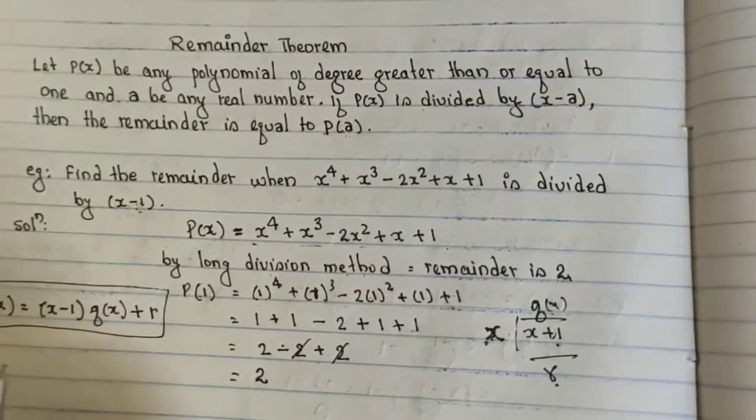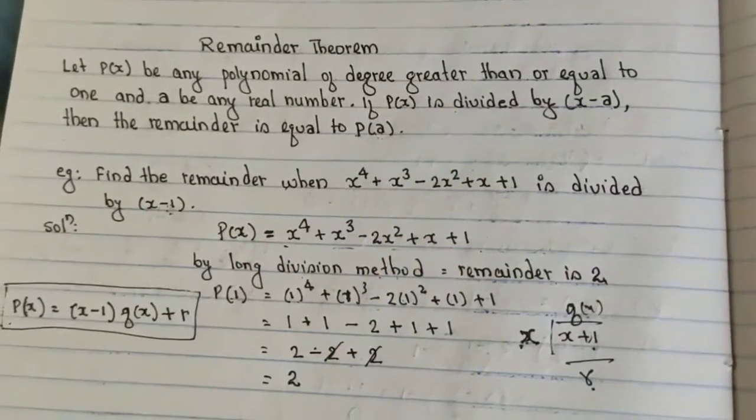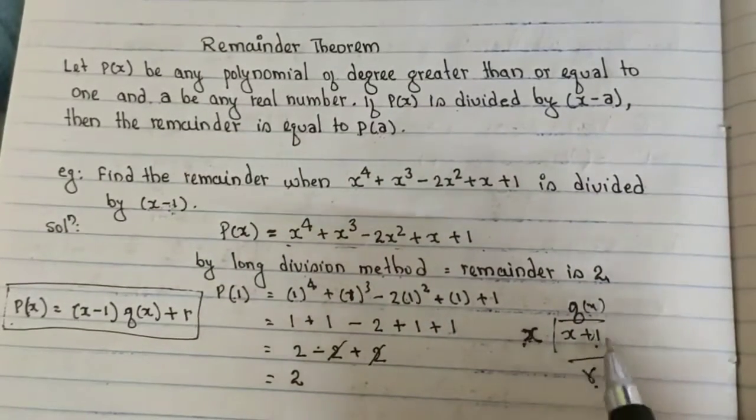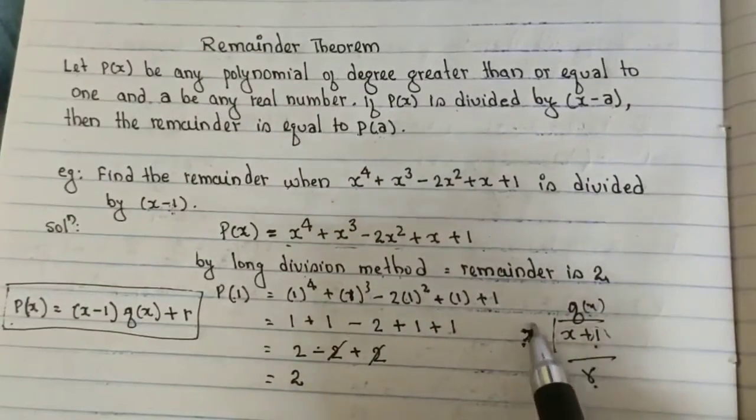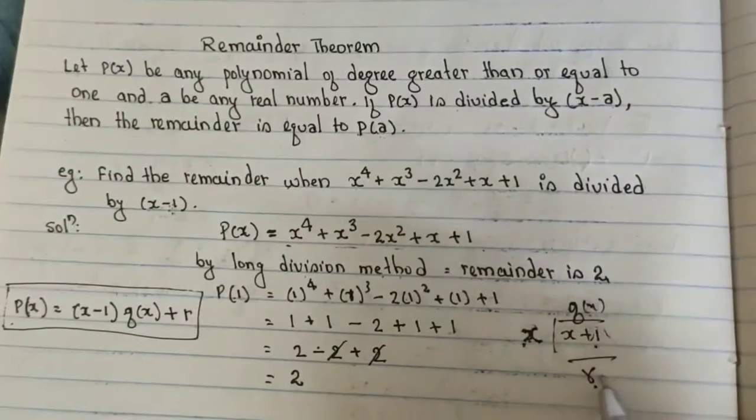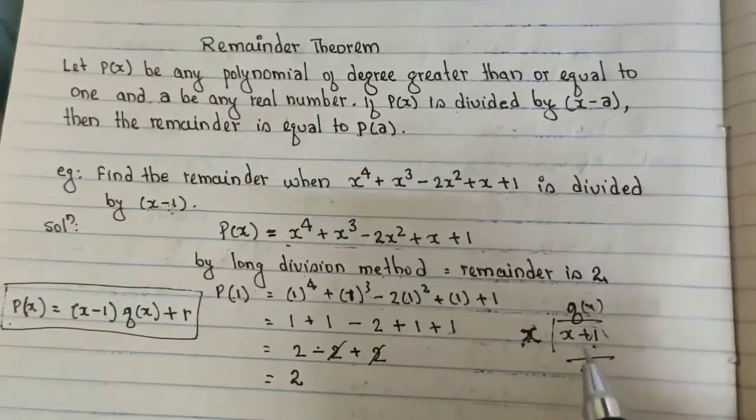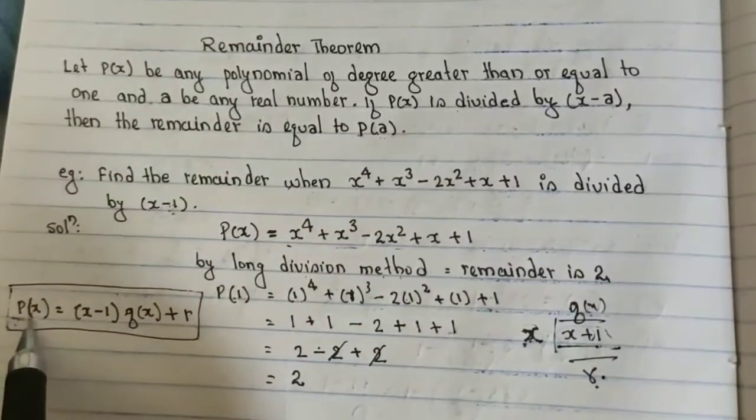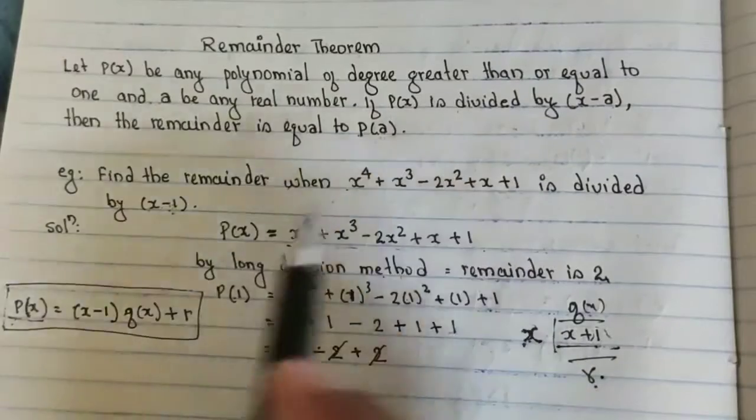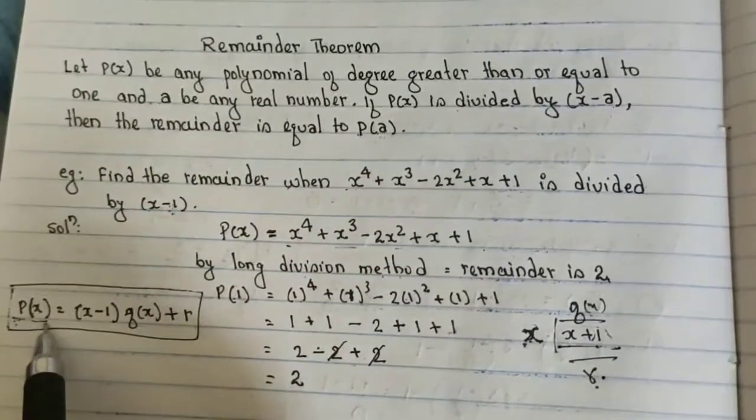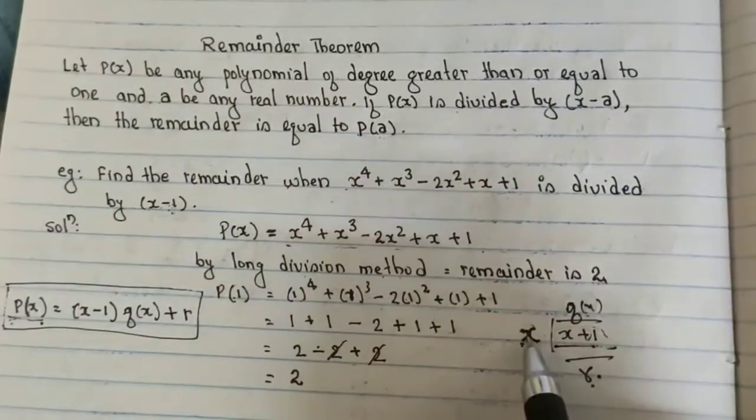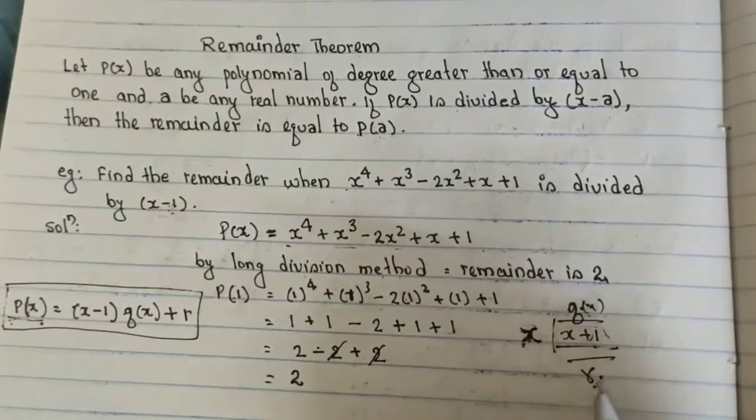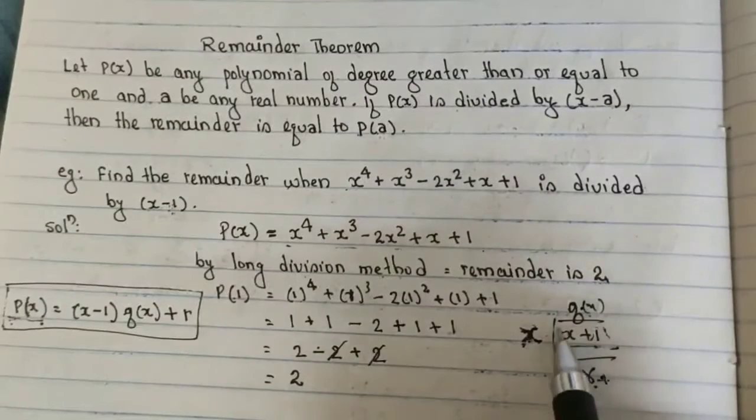One more thing that you have to keep in your mind is, suppose this is your dividend, this is your divisor, this is your quotient, this is your remainder. To get your dividend, here suppose this is your dividend P(x). If you multiply your divisor into quotient plus remainder, you will get your dividend.